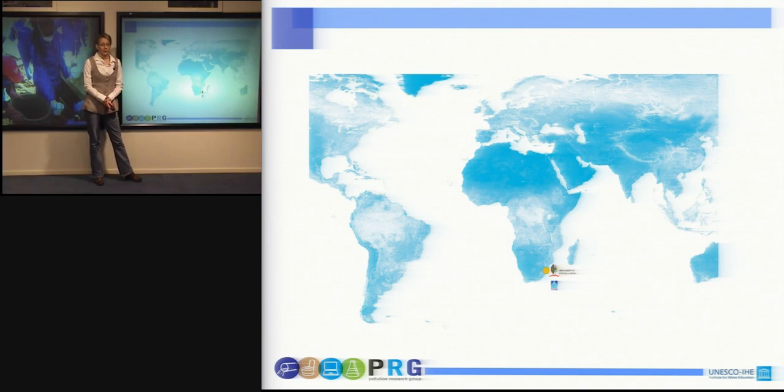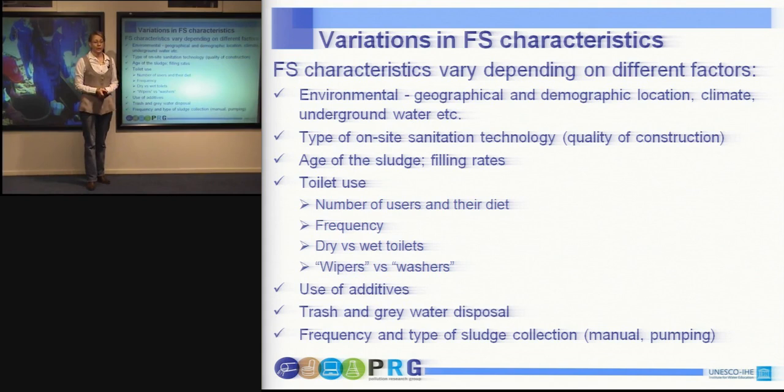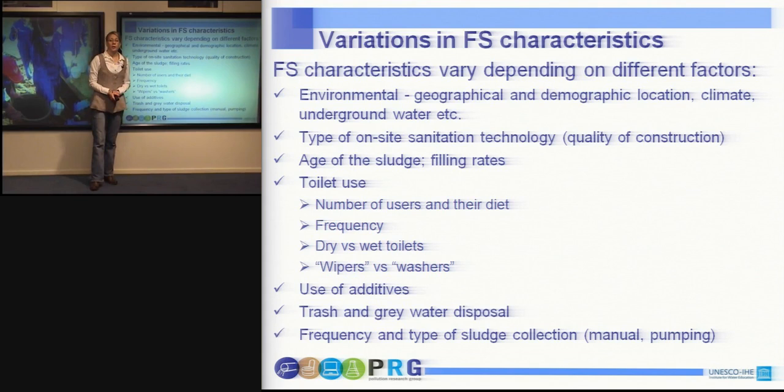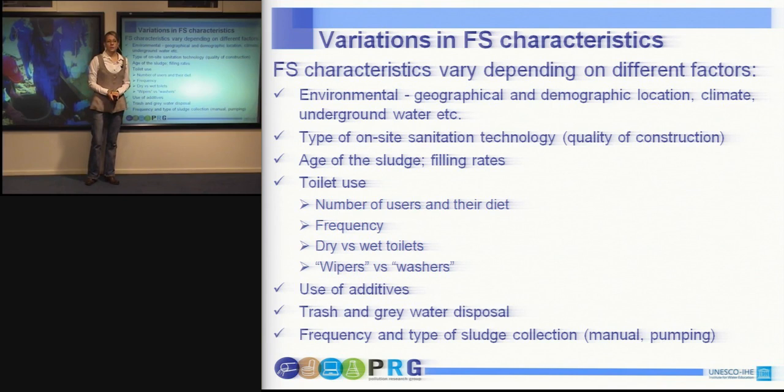What are the characteristics of fecal sludge and how do they vary? The fecal sludge characteristics are very heterogeneous. They depend on many factors, including environmental factors such as geographical location, the demography of the region, climate conditions, the presence of underground water table, and also soil type. The type of on-site sanitation technologies is also an important factor as well as the quality of the construction.